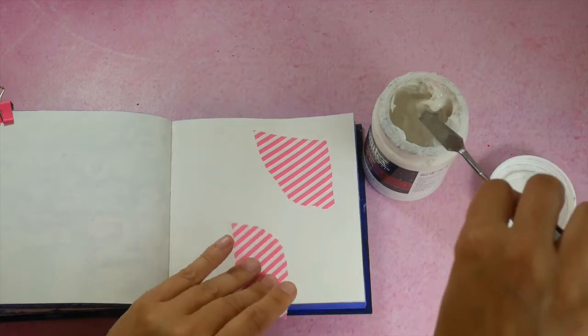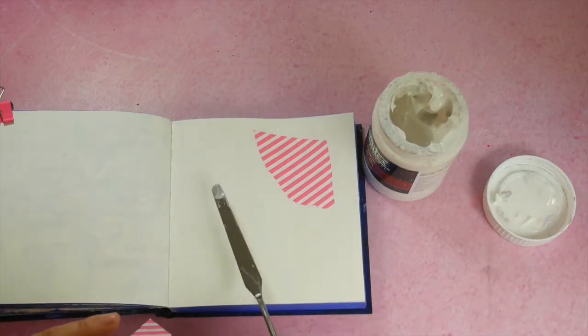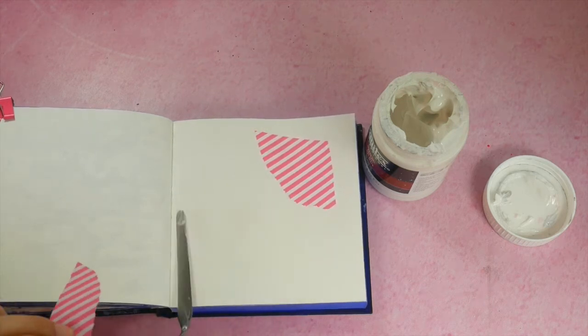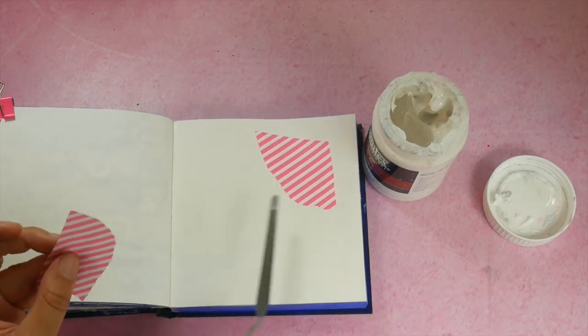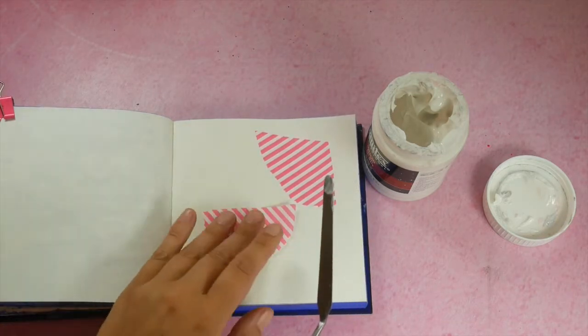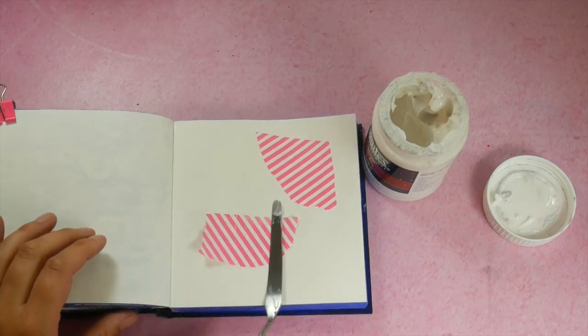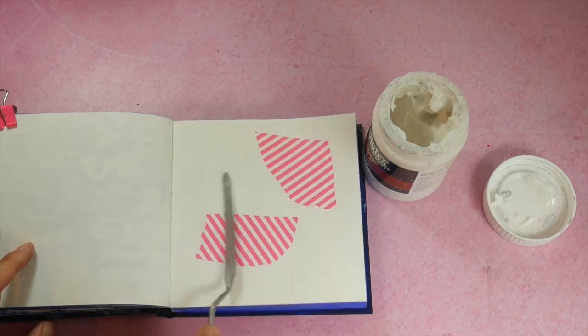And I'm taking a bit of the matte gel medium here with the palette knife and I apply a very thin layer of the gel medium like a plastic film. And then I stick my paper element on it and then I go over that paper with a palette knife again.